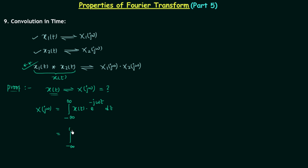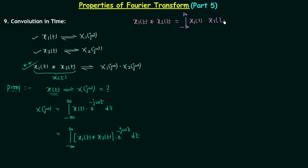So we can write X(jω) as the integration from minus infinity to infinity of x1(t) convolved with x2(t), multiplied by e^(-jωt) dt. We already know that the convolution of x1(t) with x2(t) equals the integration from minus infinity to infinity of x1(τ) multiplied by x2(t − τ) dτ. Substituting this, X(jω) becomes a double integral: the outer integral over t and the inner integral over τ of x1(τ) · x2(t − τ) dτ, multiplied by e^(-jωt) dt.